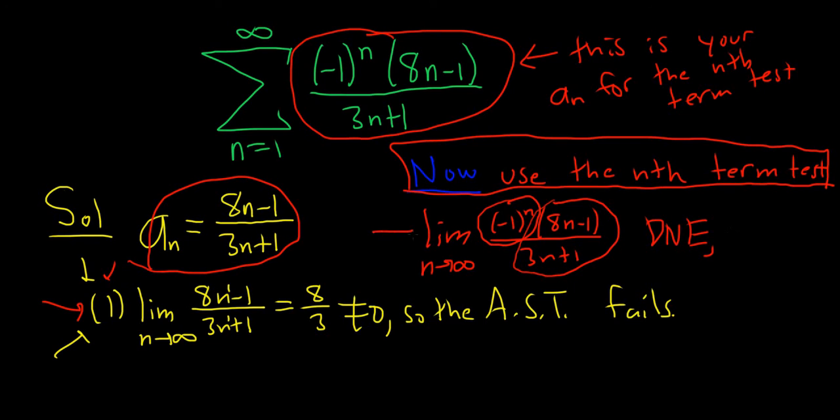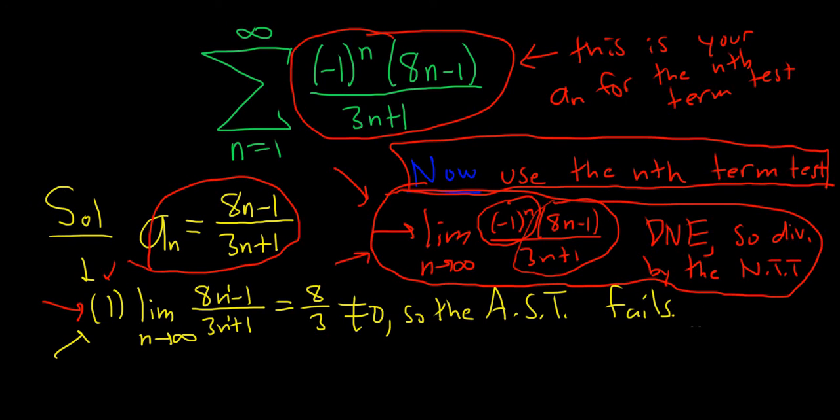Remember, if this limit is not 0, it diverges by the nth term test. So it diverges by the NTT. Diverges by the nth term test, which is the NTT. So this would be a full solution to this problem. This little piece right here that I've just circled in red, that's all you really needed to do in order to do this problem.